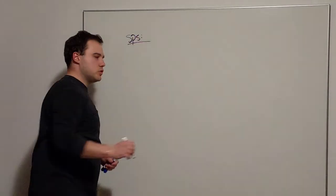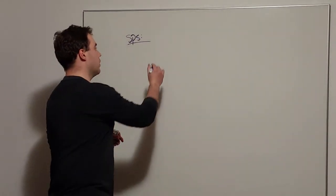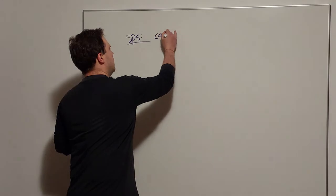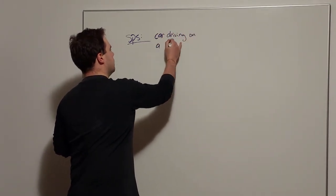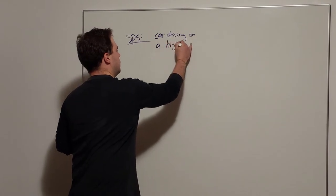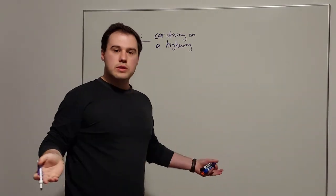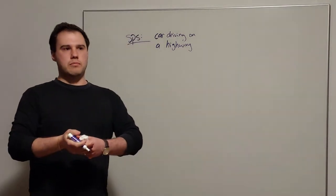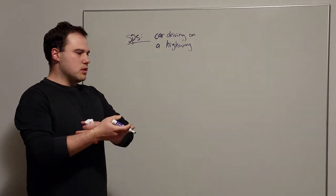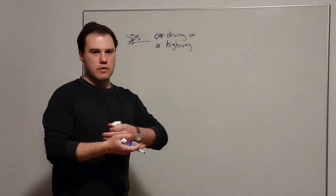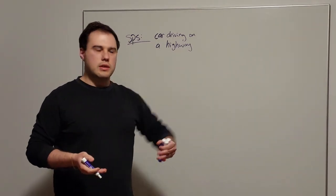I'll just suppose two contexts for comparison that hopefully everyone can connect with. We've got one: a car driving on a highway. You can imagine this will be a context where you're probably going at a fairly fast speed. Imagine like a nice smooth stretch of road for a long period of time, you're just driving at a nice constant speed.